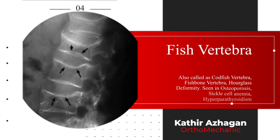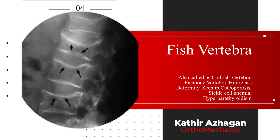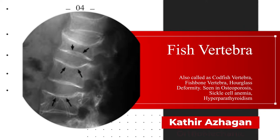Fish vertebra, fish mouth vertebra, codfish vertebra, fish bone vertebra, hourglass vertebra or hourglass deformity are various names given to this appearance. This is due to upward and downward bulging of the intervertebral disc, which simulates the vertebral shape found in fish or sometimes the bulges seen in a fish mouth. This appearance is classical for osteoporosis but can also be seen in sickle cell anemia, hyperparathyroidism, rickets, neurofibromatosis, and Hand-Schüller-Christian disease.